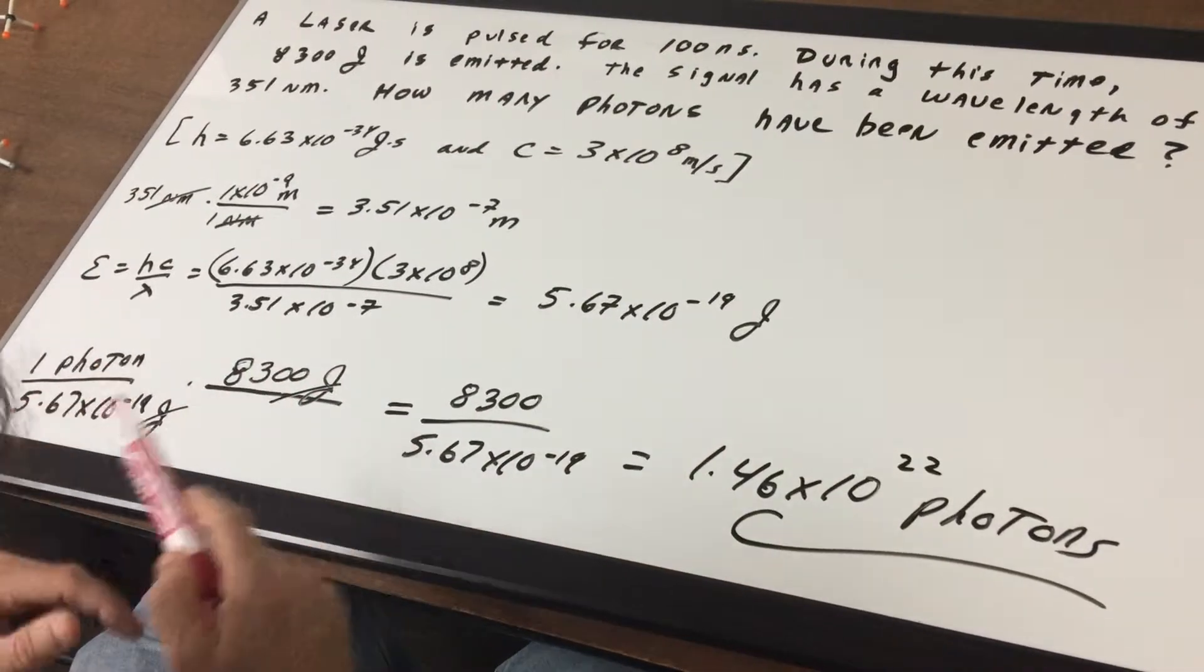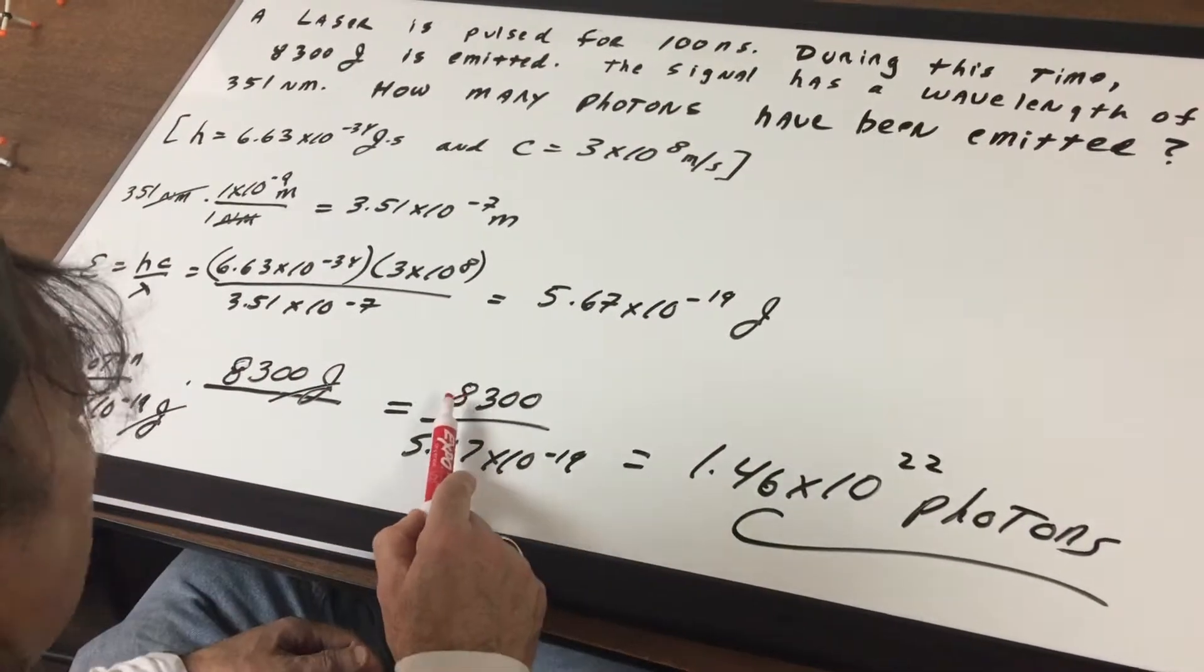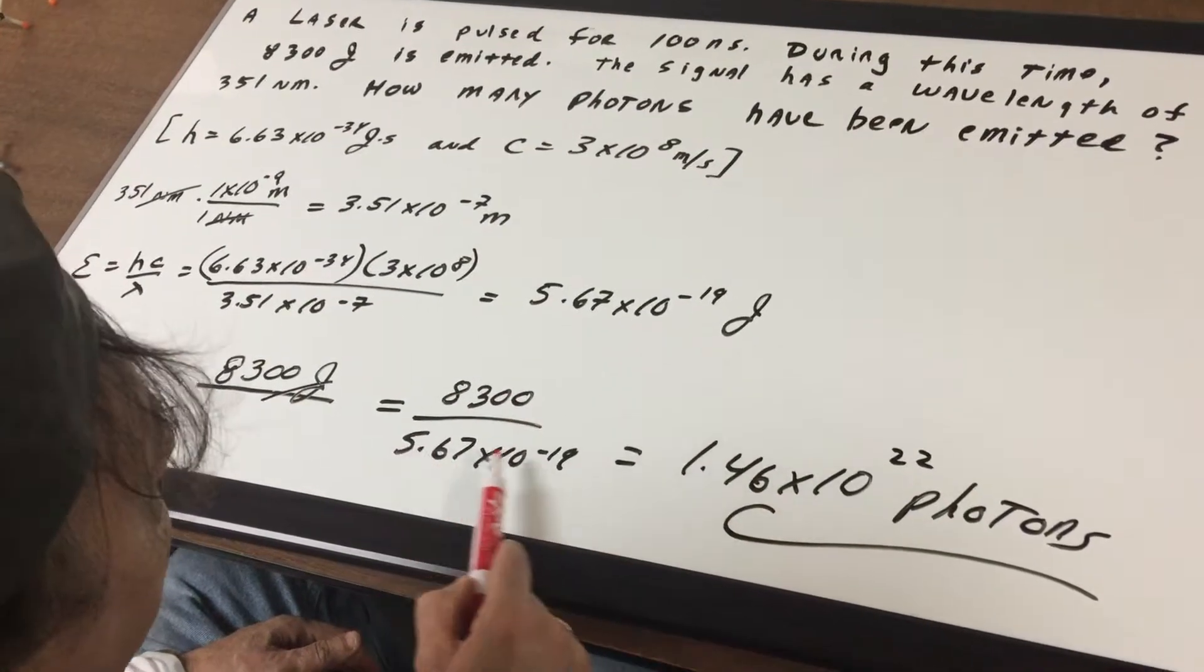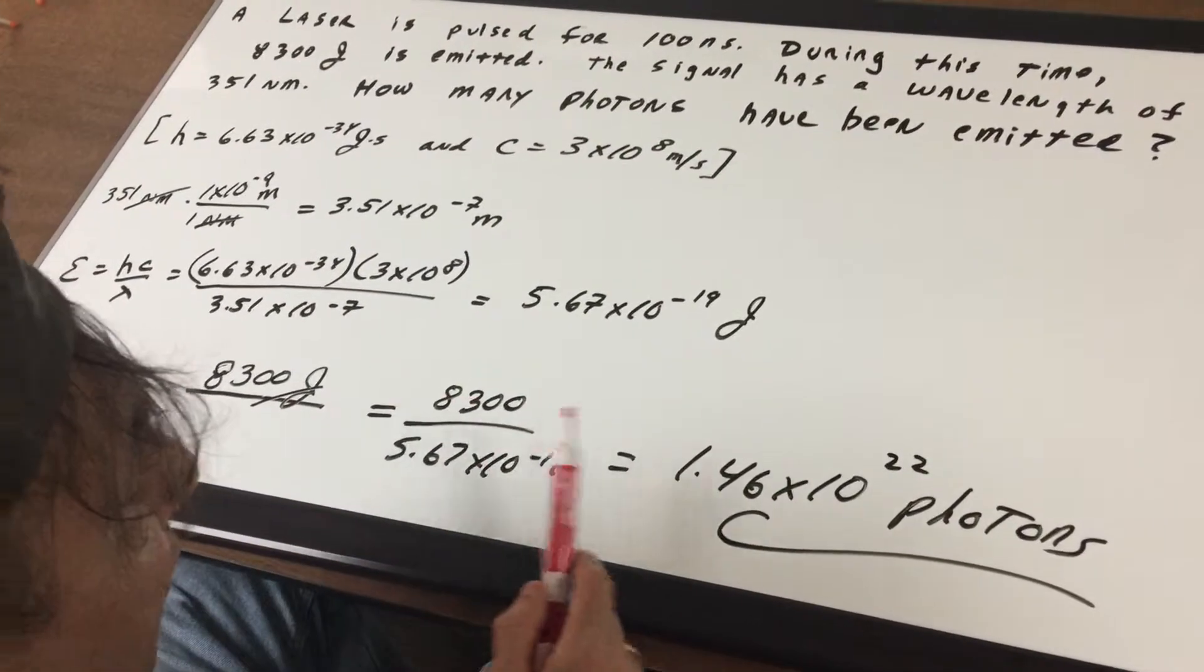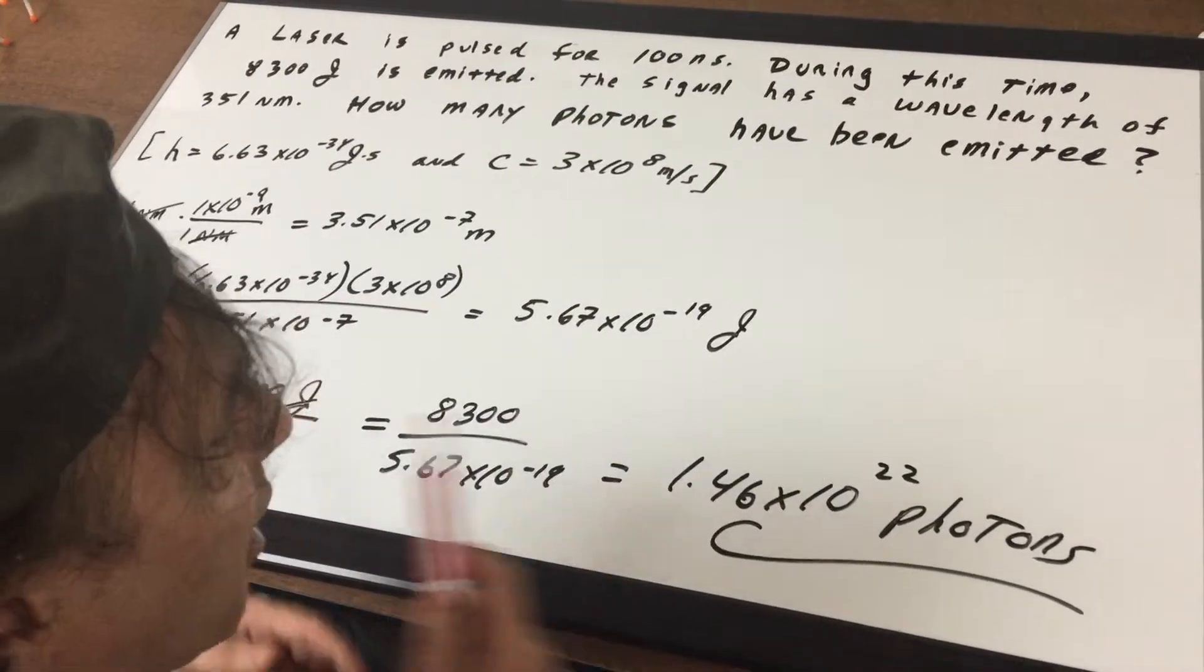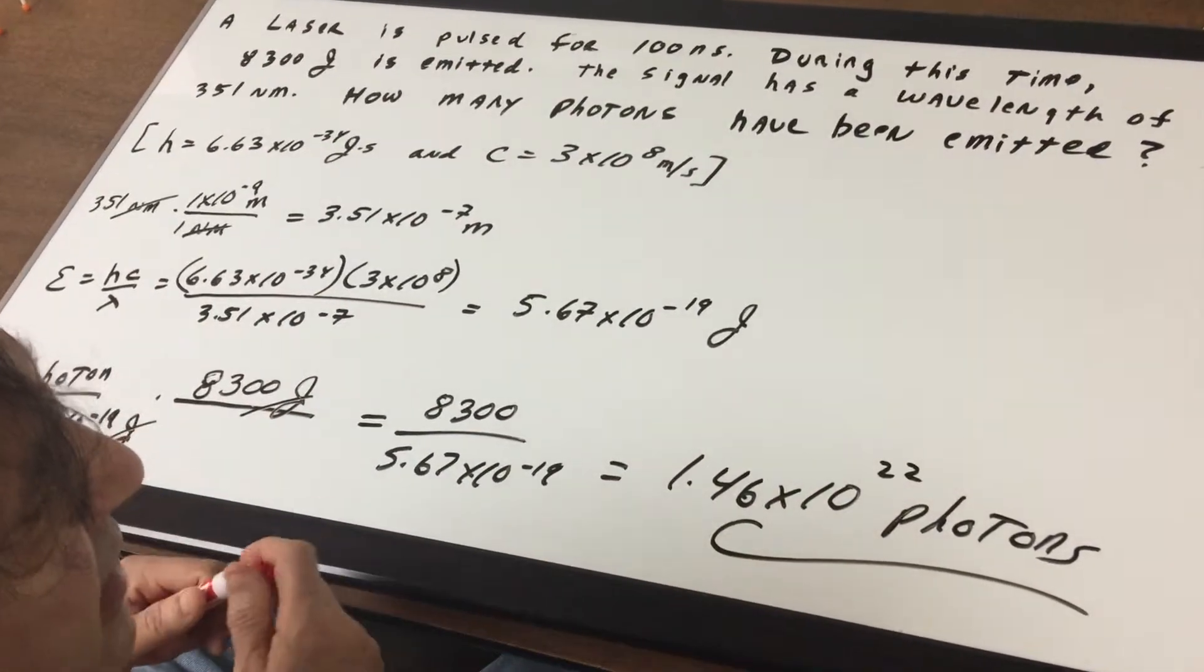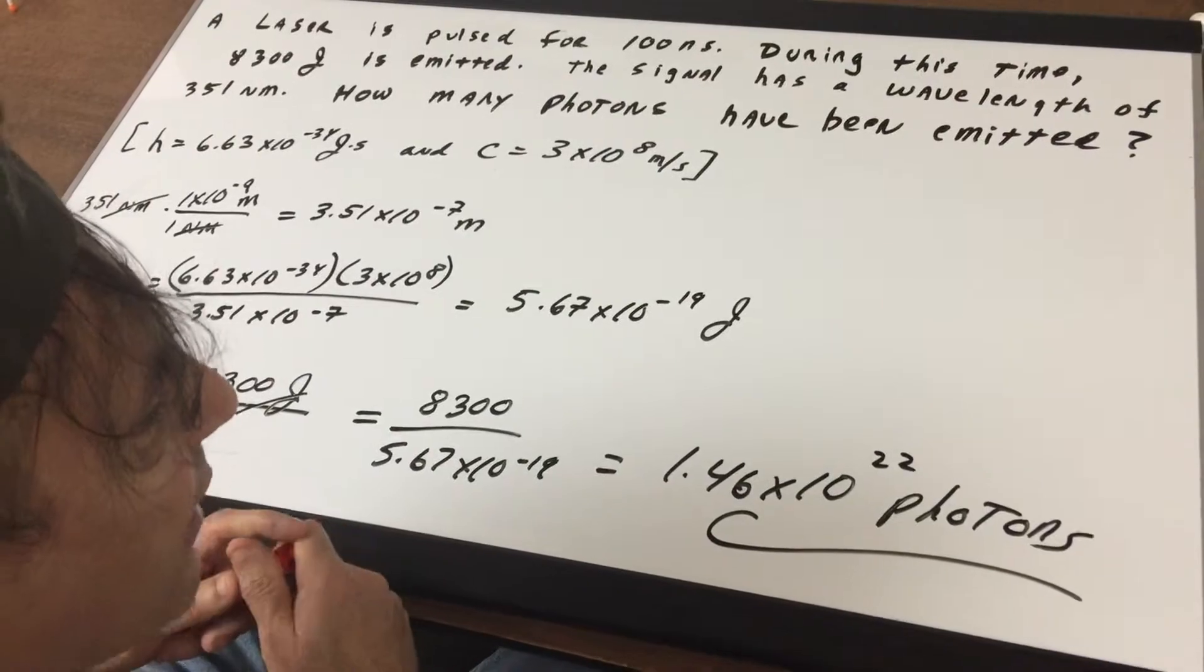If joules canceled out, we're left with photons. So 8300 divided by 5.67 times 10 to the minus 19 gives me the number of photons, which is 1.46 times 10 to the 22nd photons.